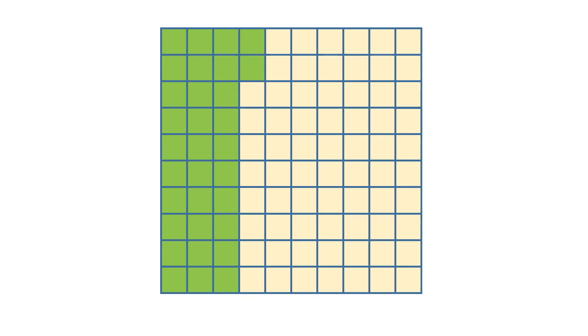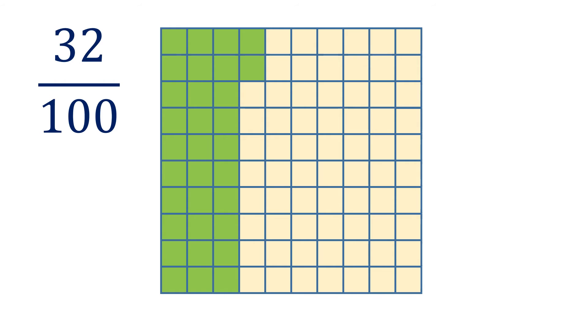Another one. Let's count how many shaded parts there are out of one-hundredth. Observe that the first column, second column, and third column are all shaded — that means it's all thirty, because there are three columns and each column is ten boxes. So thirty, and then there are two extra shaded parts. So that's all in all thirty-two. It's thirty-two out of one-hundredth, or thirty-two hundredths. In decimal, it's 0.32, read as thirty-two hundredths.